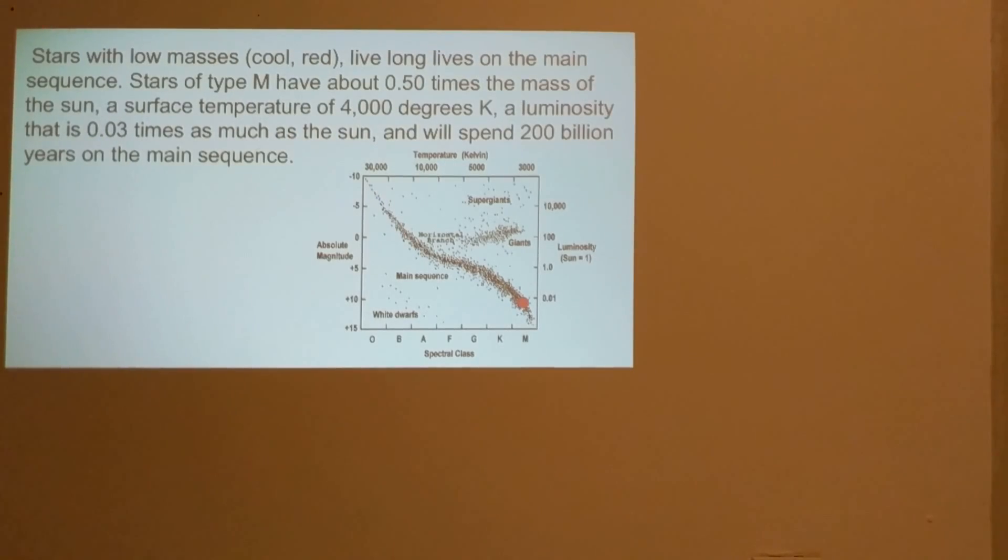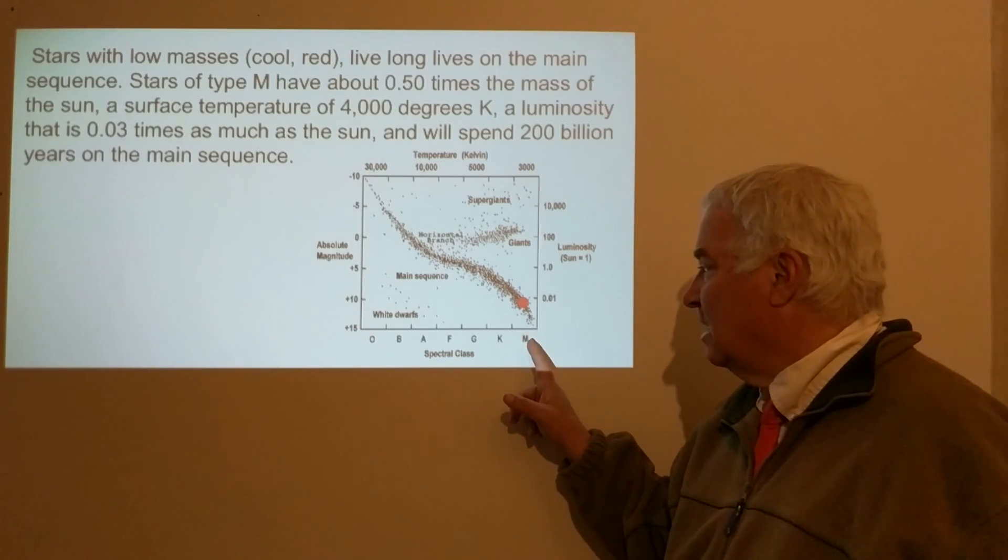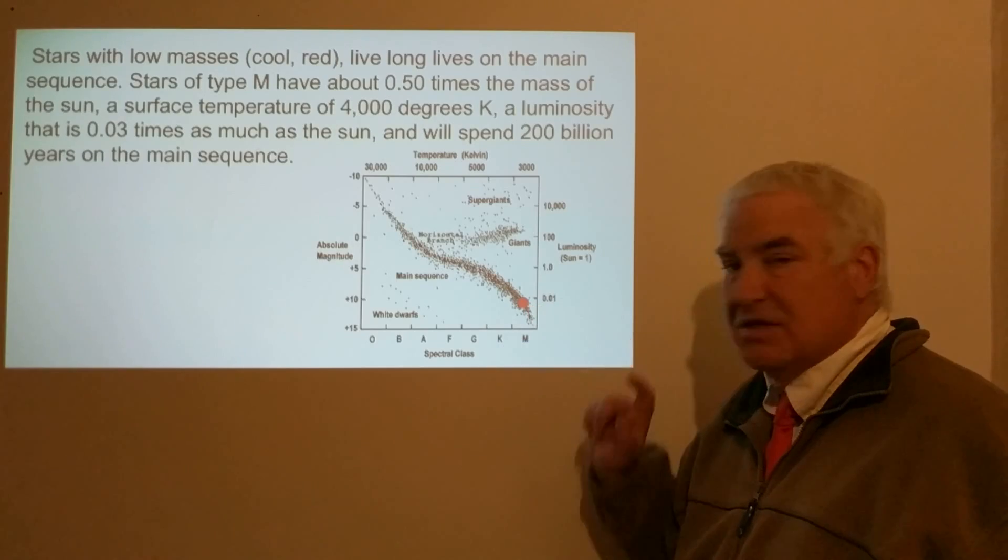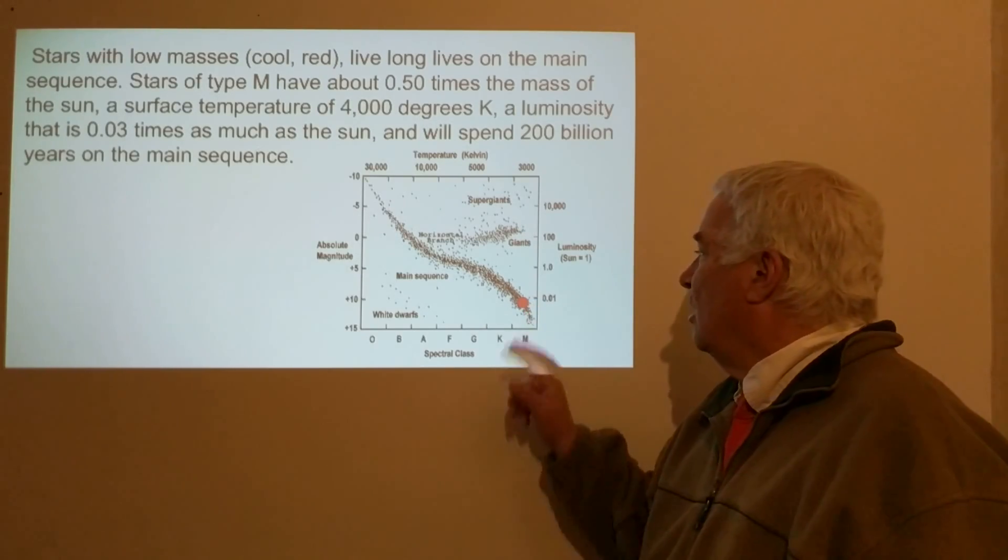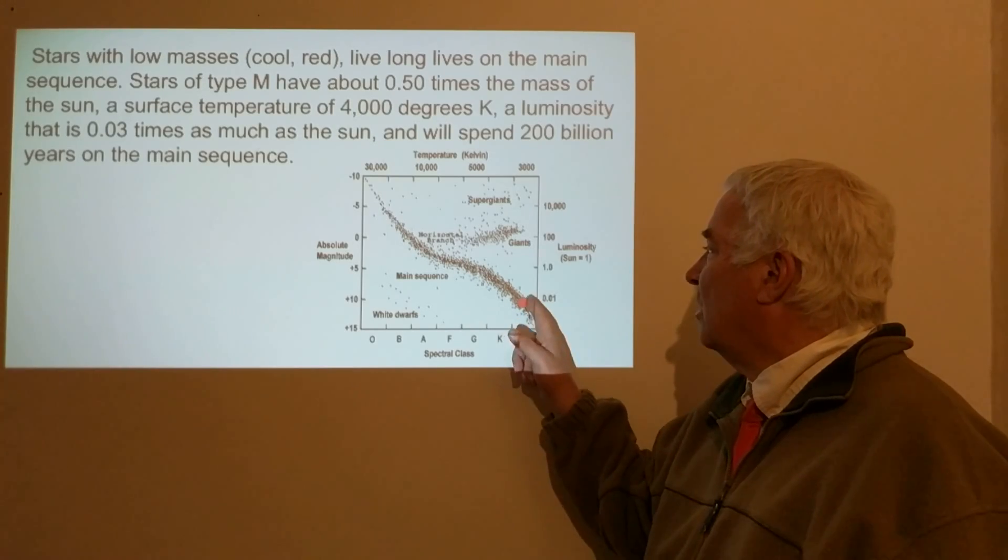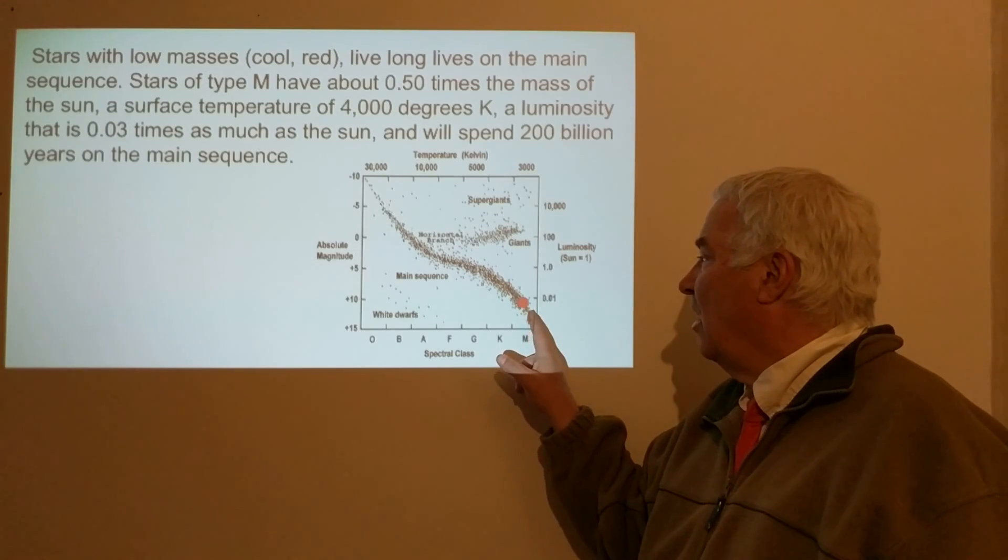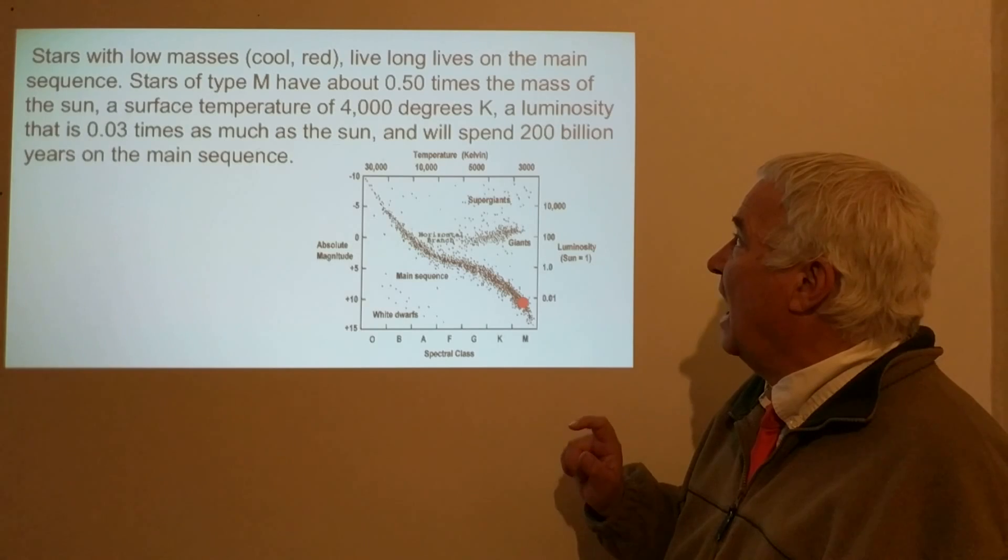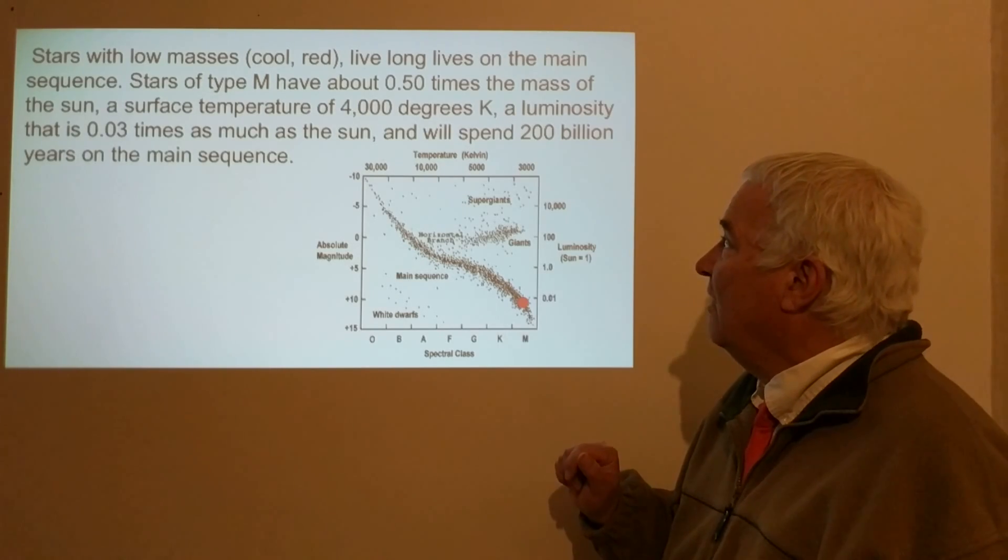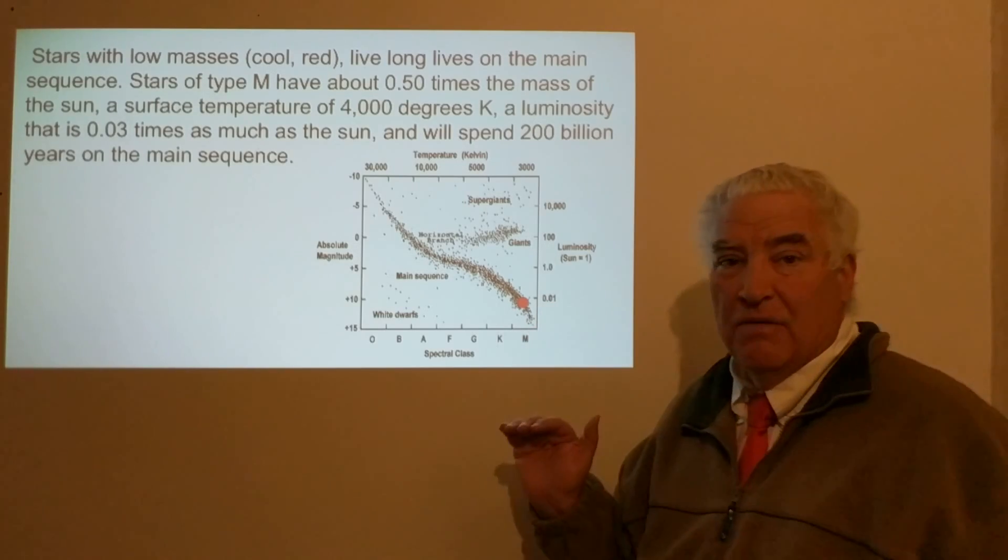If we look at the other end of the spectrum, literally in spectral class, the M stars—and these M stars are red stars, very often called red dwarfs to make sure that we're not thinking about the red giants which are up here. And these are much lower mass stars, they're only about half the mass of the Sun.